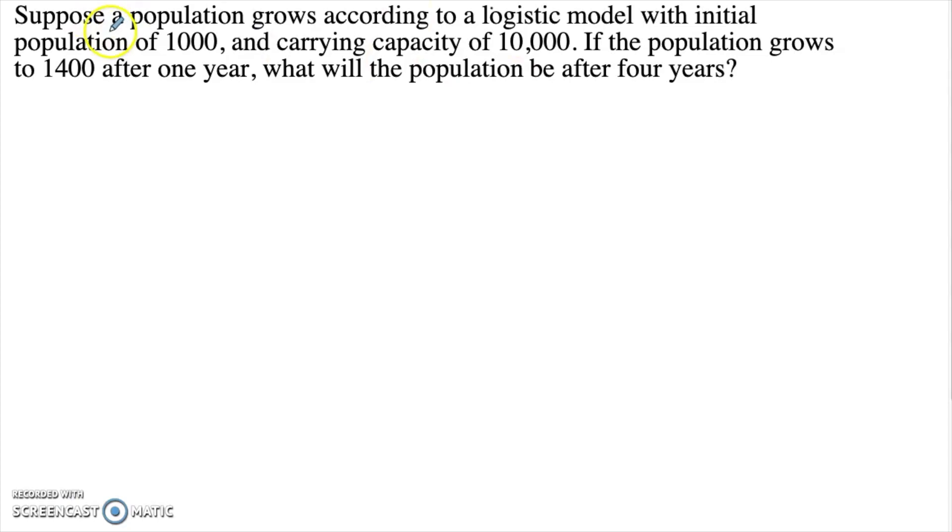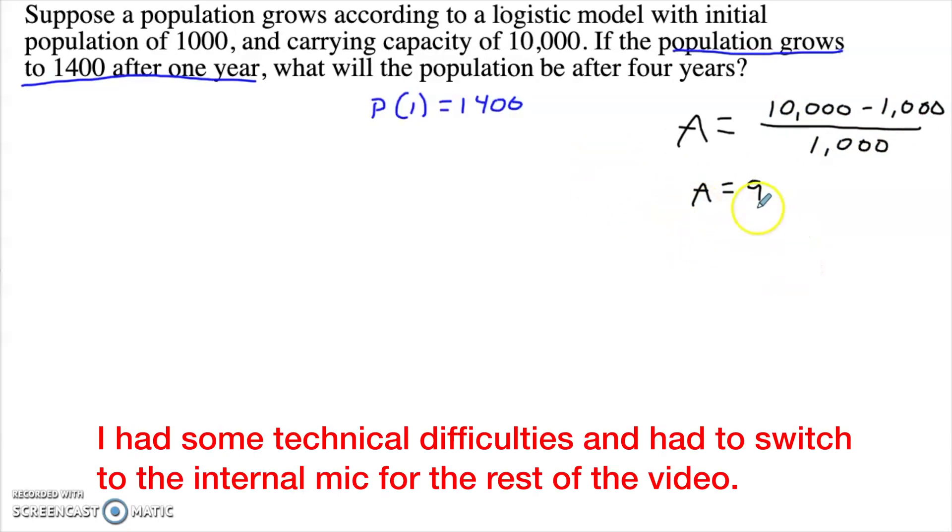Surprisingly, using it is actually very straightforward. So if we have a population growing according to a logistic model, if we start with an initial population of 1,000 carrying capacity of 10,000. So right away, let's calculate that a value. So remember, a is our carrying capacity. That's going to be 10,000 minus 1,000 in this case, the initial value over 1,000. So that'll give us an a of 9. So now that we know what that a is, we're going to use this initial condition that after one year, it was 1,400. So p of 1 is 1,400.